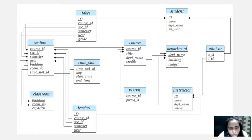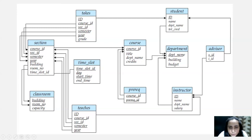Before I begin converting this into an ER diagram, let's first understand what this whole schema is about. There is 'course', which contains course ID, the title of the course, the department name where the course is being taught, and the number of credits. Department name is taken from the relation called 'department', where department name is the primary key — so this is a foreign key in course. Department simply stores what departments are there in the university: their names, building, and budget.